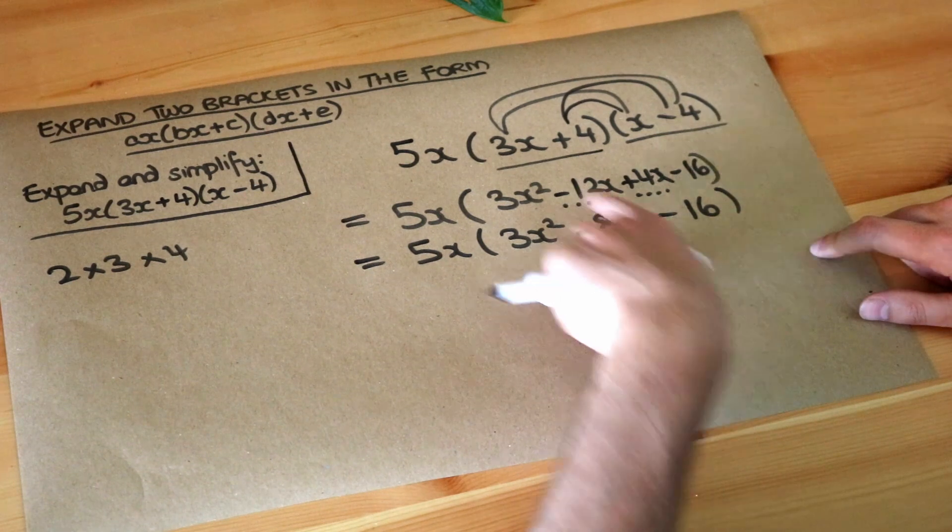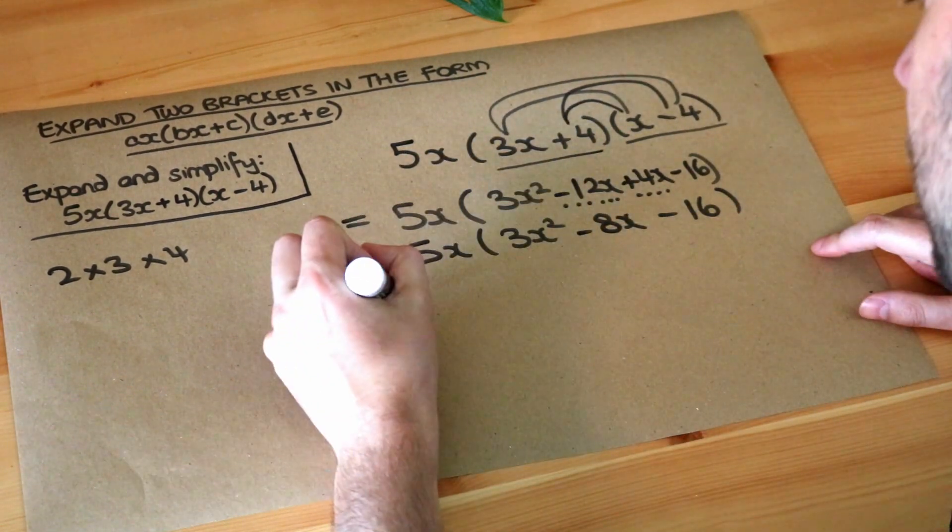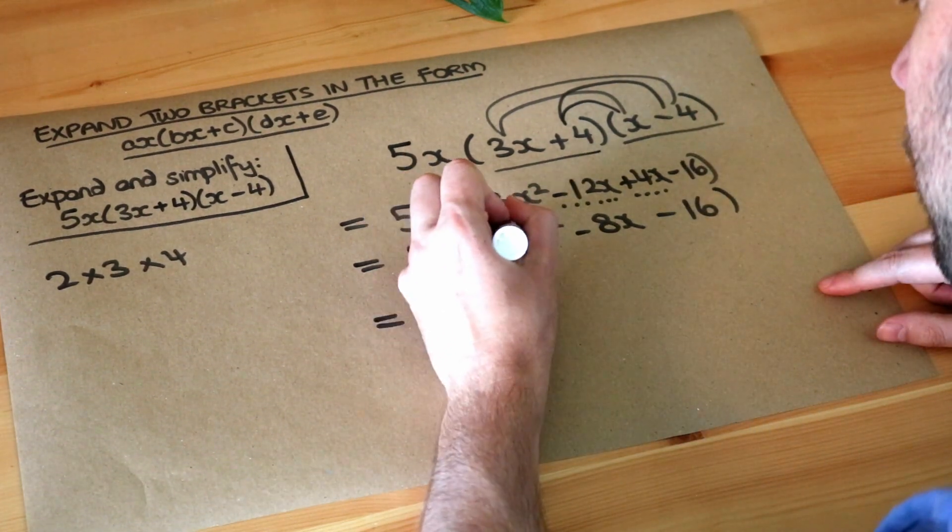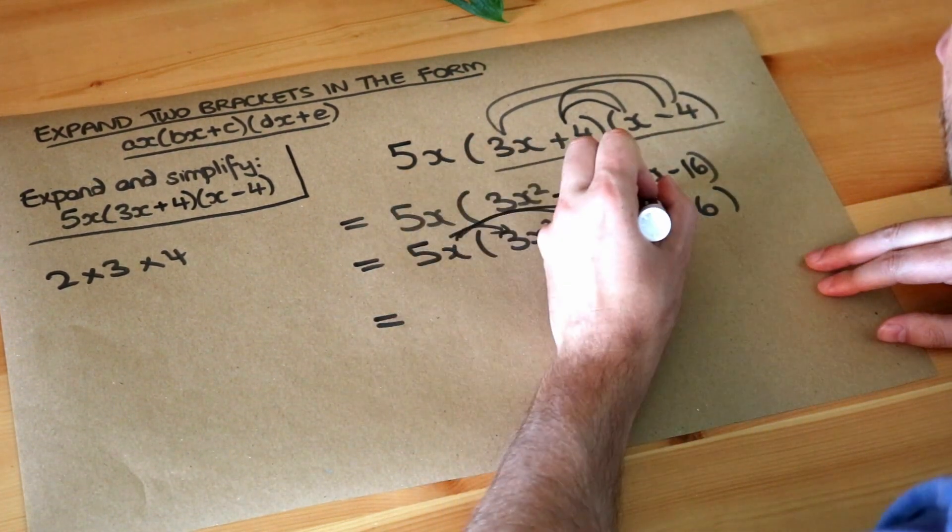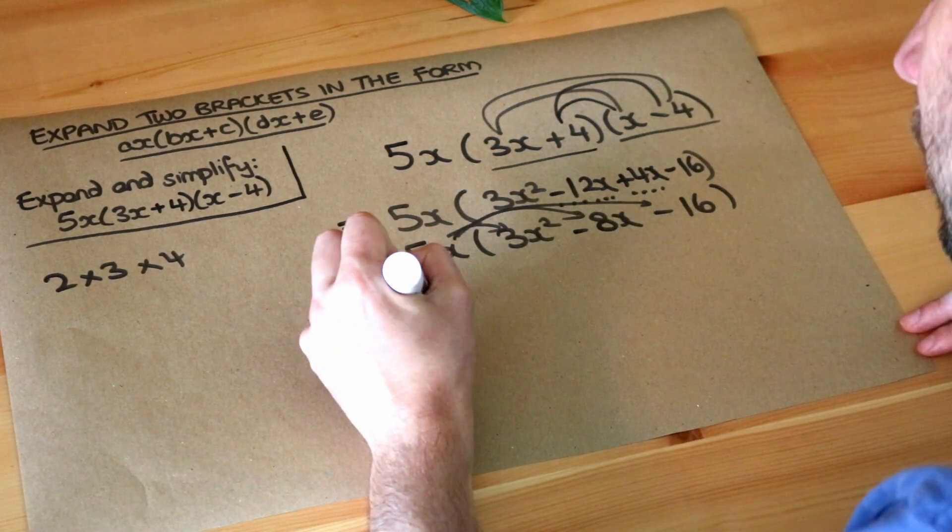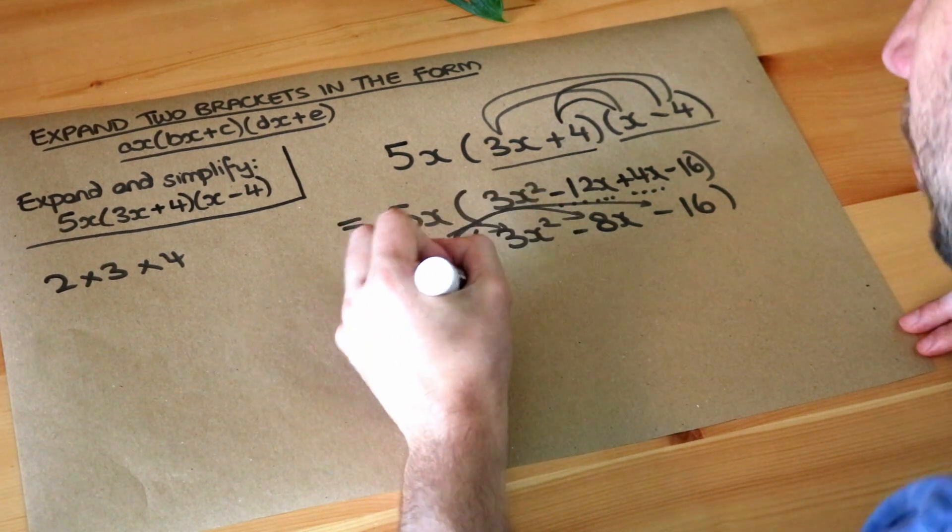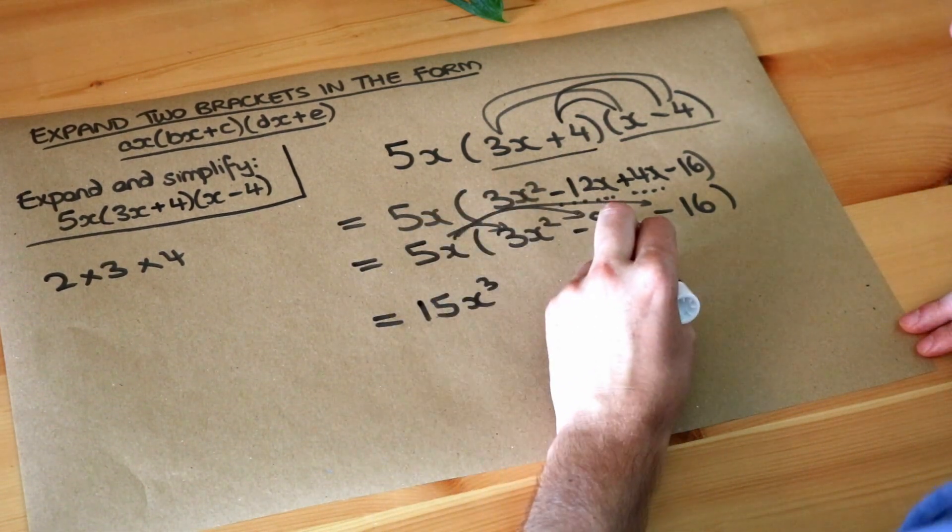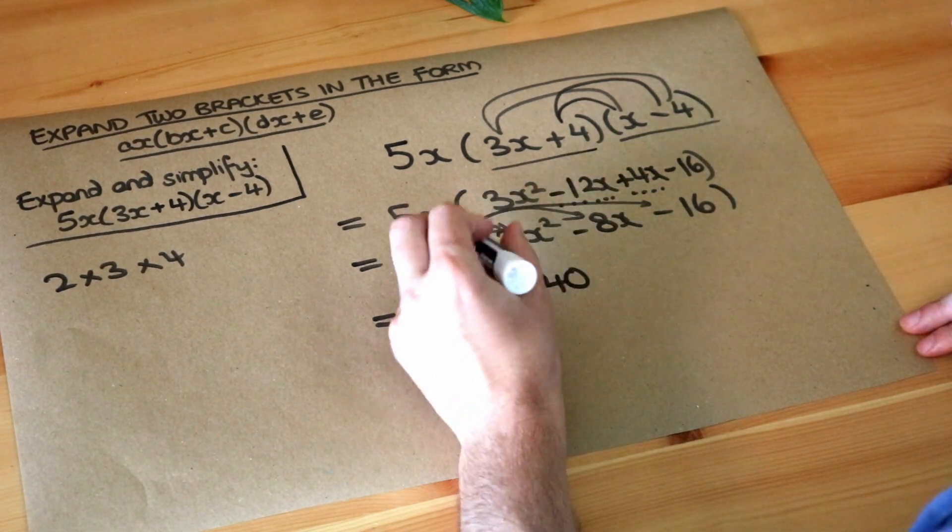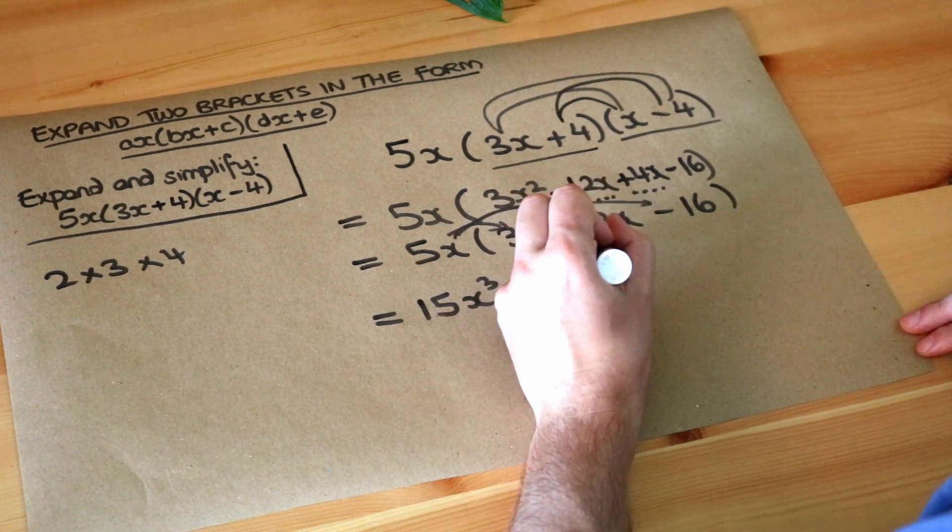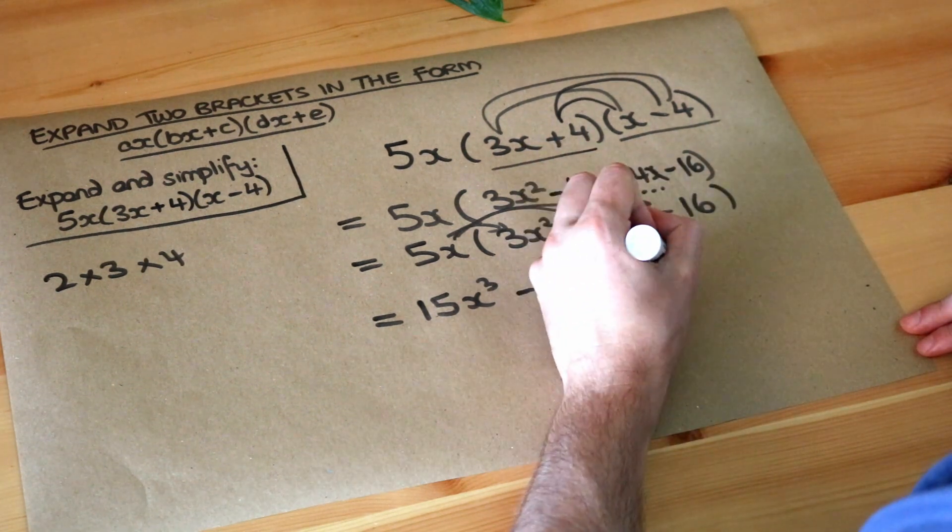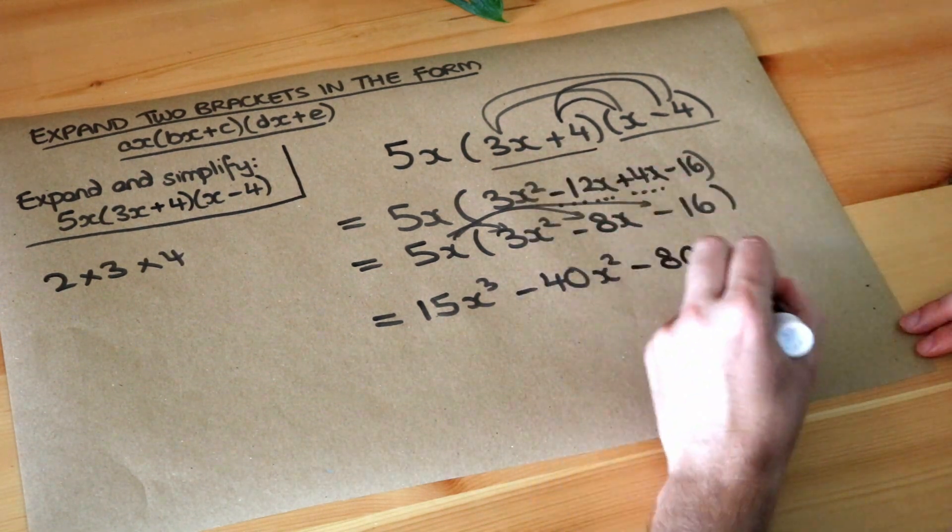And then that is going to be multiplied by the 5x on the front. So now we've got a single bracket expansion. We do the 5x times each of the things inside that bracket. So we do the 5x times the 3x squared, which is 15... well, x times x squared is x cubed. We've got the 5x times the minus 8x. Well, 5 times minus 8 is minus 40, x times x is x squared. And finally, we've got the 5x times the minus 16. That's going to be minus 80x. And that is the final answer.